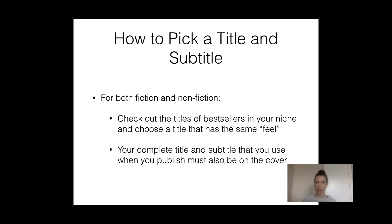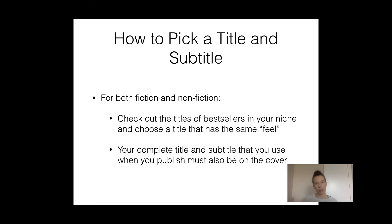So how to pick a title and subtitle. For both fiction and non-fiction books, go and look at the bestseller list in the category that you're publishing in, in the subcategories. Look at the titles that those authors have used and really get an idea of the feel for those titles. What kind of words are they using? How do they make the reader feel? Are they nouns, verbs, adjectives, adverbs? Start to look at the bestseller titles and then choose a title that would fit in with the bestsellers in the niche and subcategory that you're targeting.